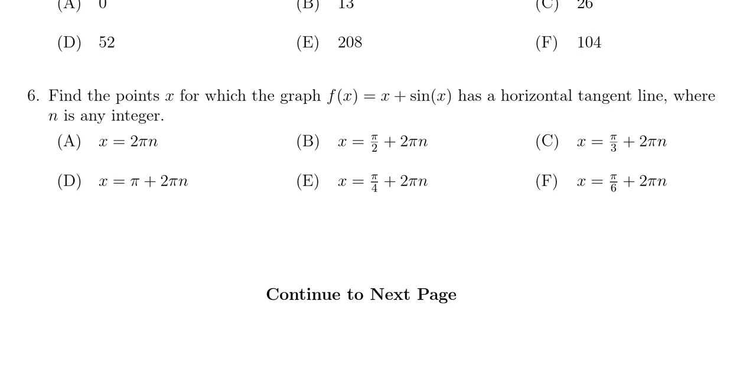Where n is any integer, which you'll see in the answers—there's going to be some n's, and that's because there's actually multiple horizontal tangent lines.